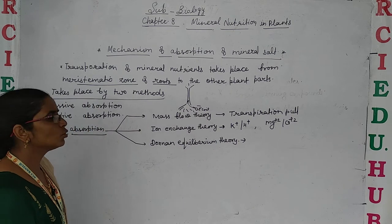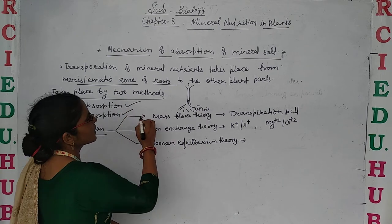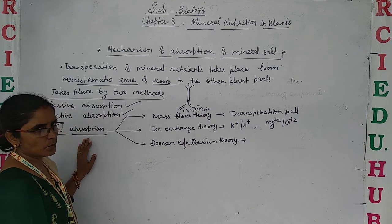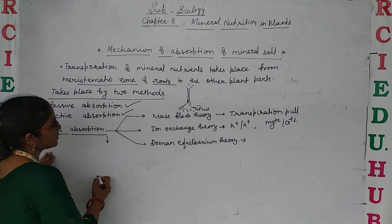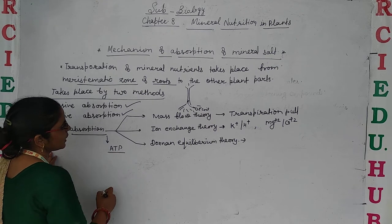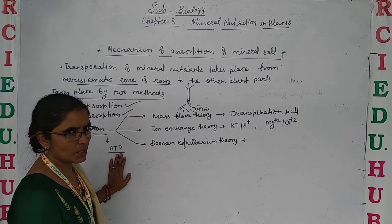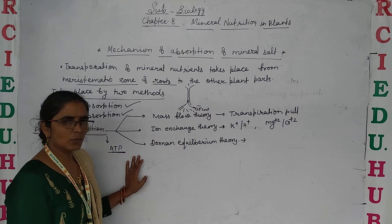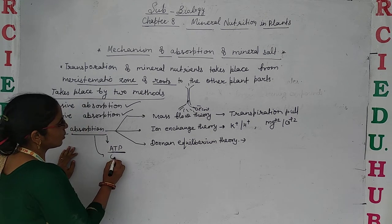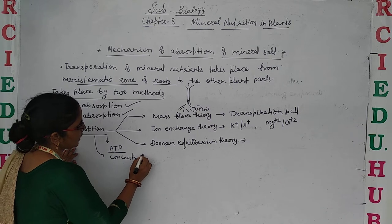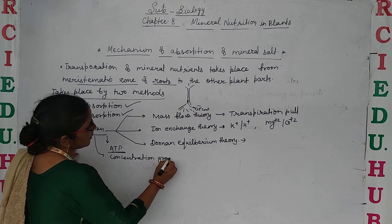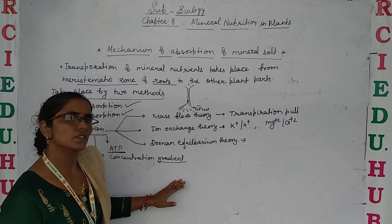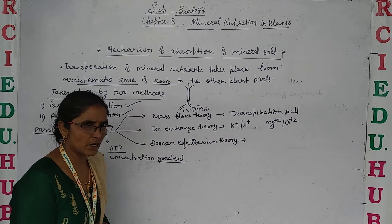This transport mainly takes place by two processes: one is passive absorption, and the second is active absorption. In passive absorption, there is no use of ATP — that is, no utilization of adenosine triphosphate, the energy currency. Without using ATP, passive absorption mainly depends on the concentration gradient. On the basis of this concentration gradient, mineral nutrients are transported from one part to another part of the plant.